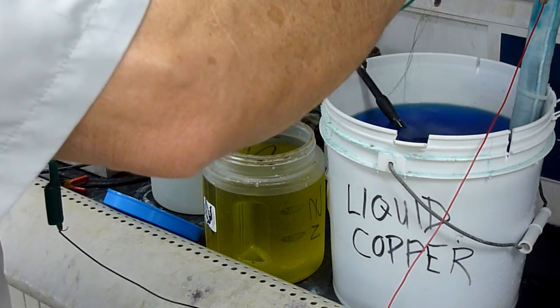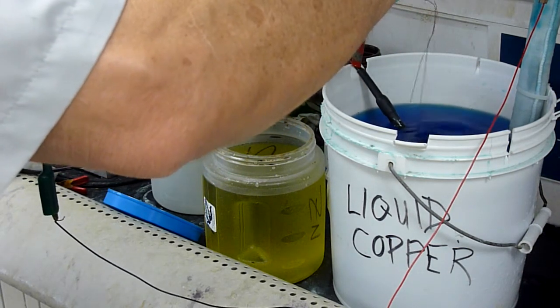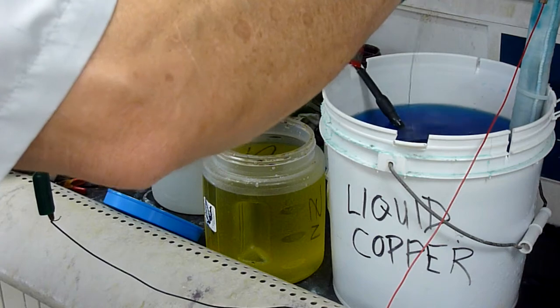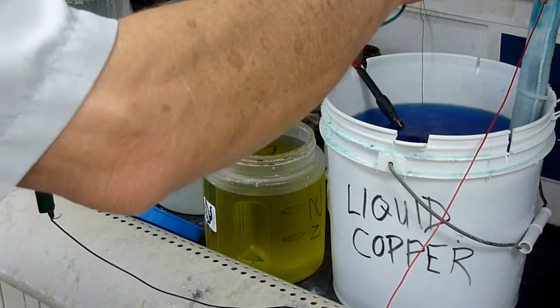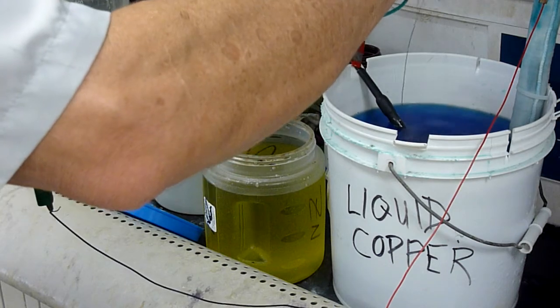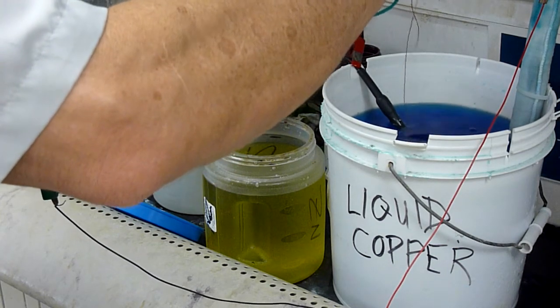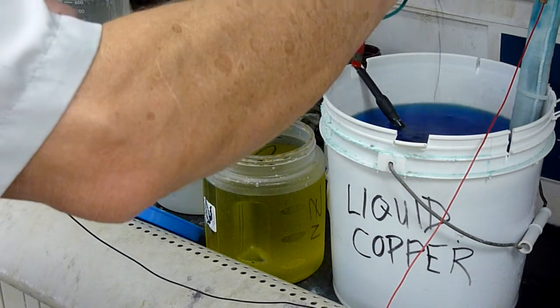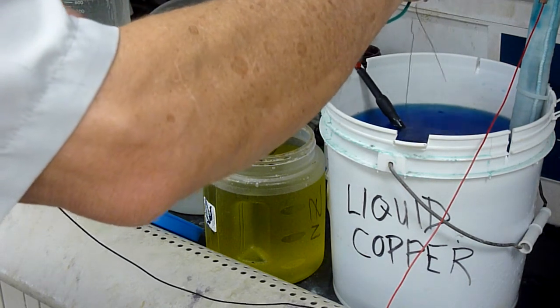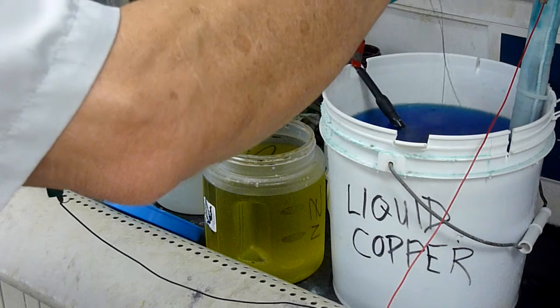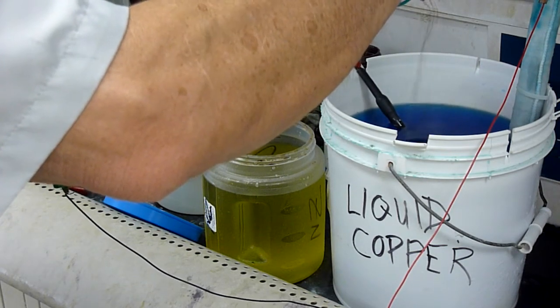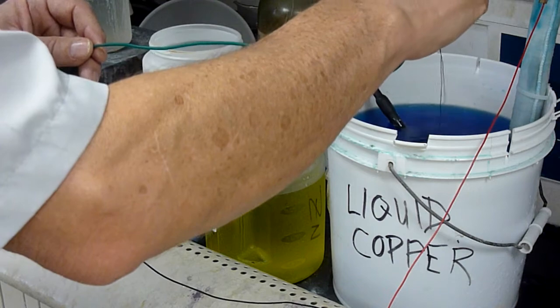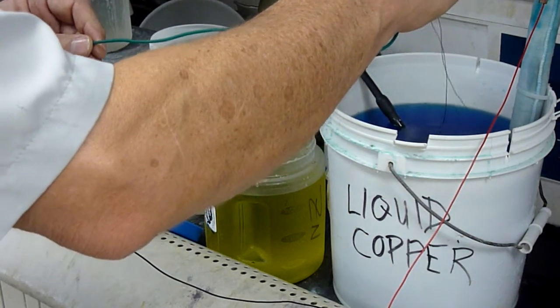Like always, we like to agitate so that you're replenishing the plating solution right at the surface of the part, which is where all the action is, is right at the surface. The kind of preparation I'm doing right now between zinc-ate, double zinc-ate, and then into this copper solution, this is exactly how we prepare a part for copper electroforming.